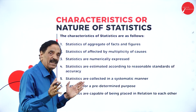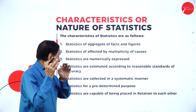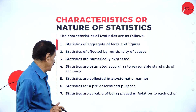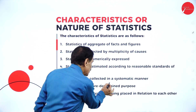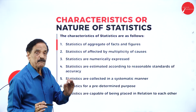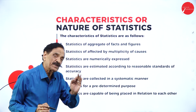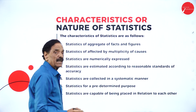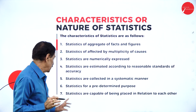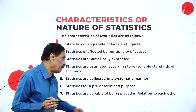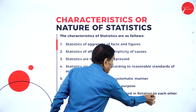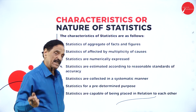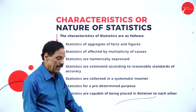Fourth, statistics are estimated according to reasonable standards of accuracy, so accuracy is represented through collected numerical data. Fifth, statistical numbers are collected in a systematic manner. Sixth, statistics are used for a predetermined purpose. Seventh, statistics are capable of being placed in relation to each other — one figure is compared to another figure, one data to another data.